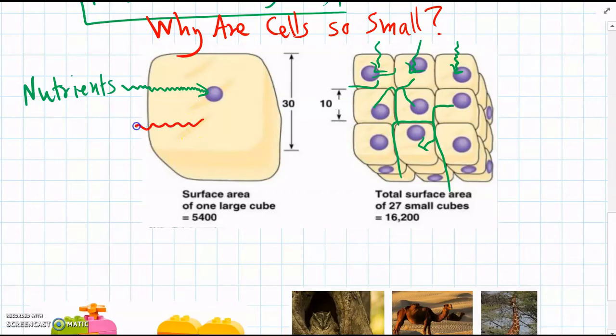So when wastes come out of the cell, it takes a long time for waste to get out of a large cell—they have a long way to travel. But for small cells, wastes can easily travel from the middle and then leave the cell.